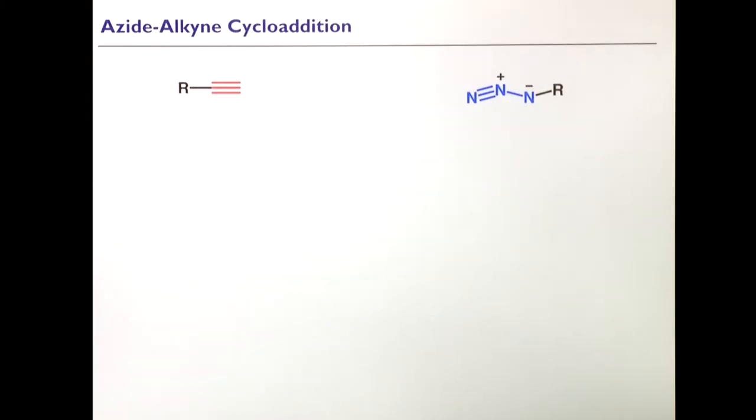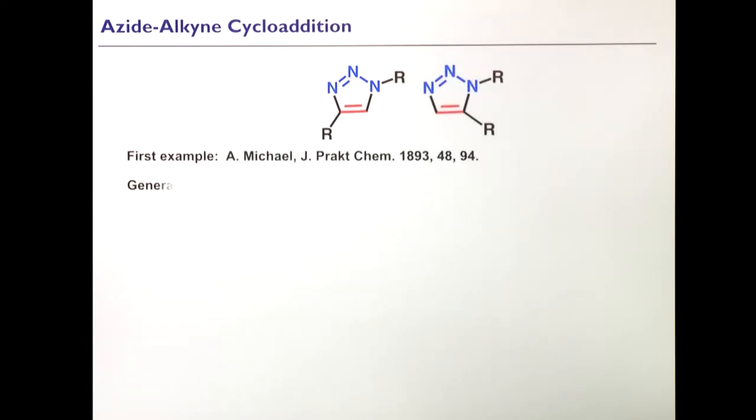Azides and acetylene, not being natural materials, the reactivity between them has been known for some time. So they can actually react together to form those five-membered very stable heterocycles. And that has been discovered by Arthur Michael, of Michael additions, already in 1893.